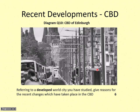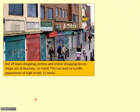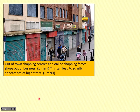You also need to know about recent developments in developed countries. Our developed example is Edinburgh in Scotland. The question asks you to refer to a developed world city you've studied — that means give detail, give reasons for the recent changes which have taken place in the CBD. One of the first changes we've seen in recent years is that our high streets have started to become very run down and scruffy, with lots of closed up shops.